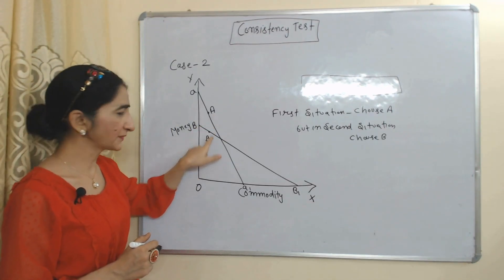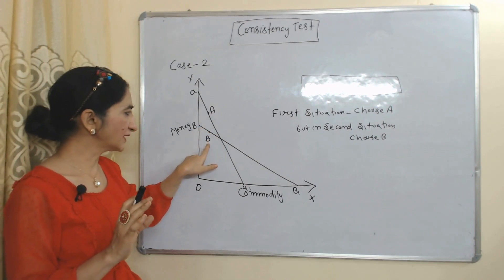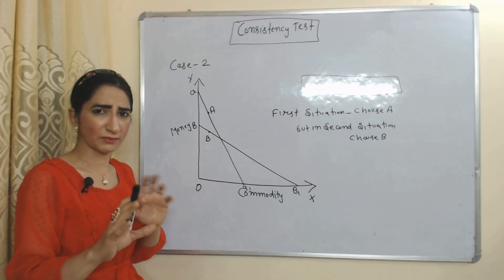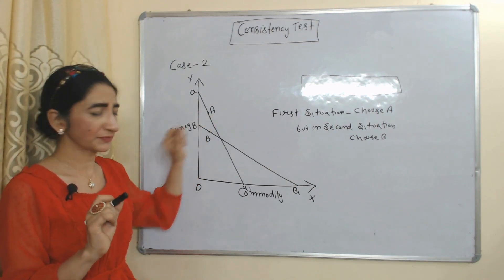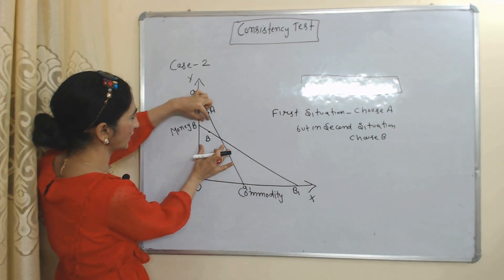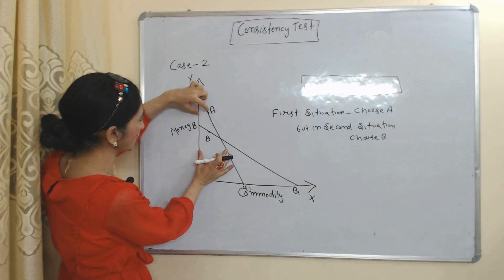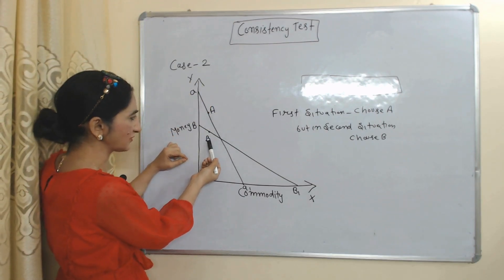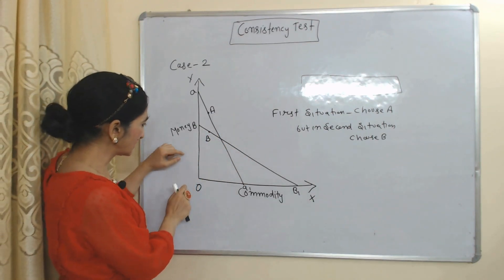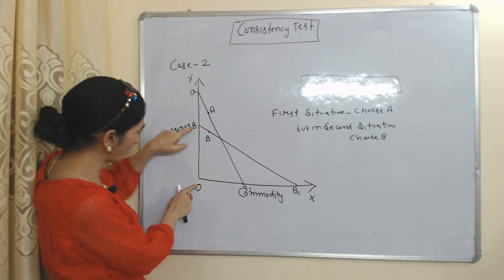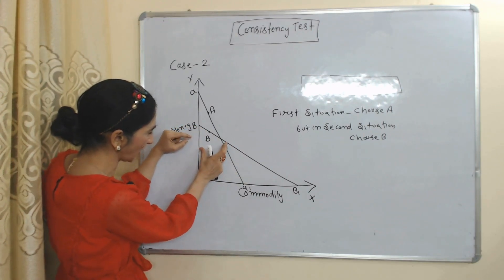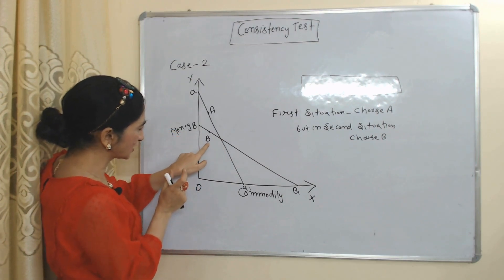In case two, again A is the first best option and B is the second best option. The first situation is triangle OA-A1. Here both options A and B are available, so the consumer chooses A because A is the first best option. In the second situation, triangle OB-B1, we check what the consumer chooses when A may not be available.